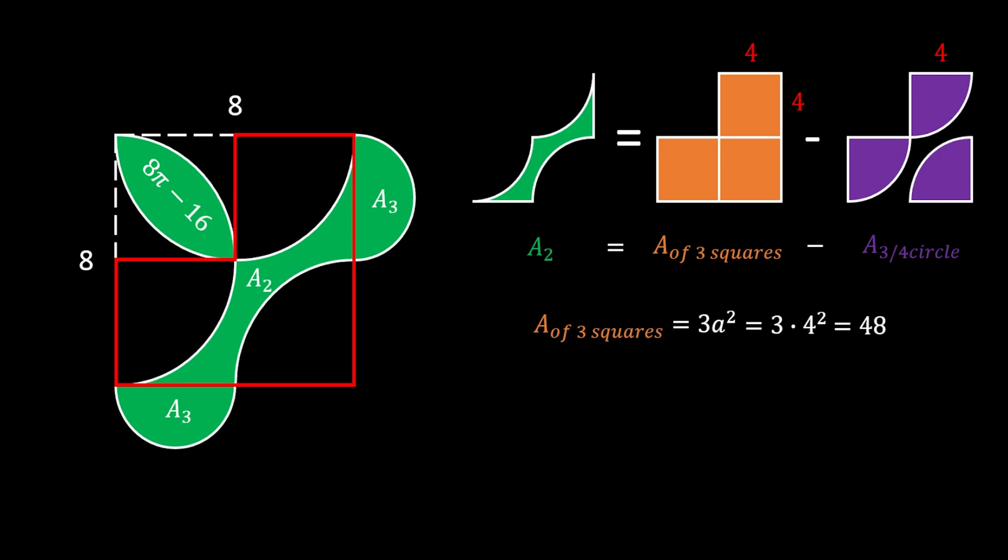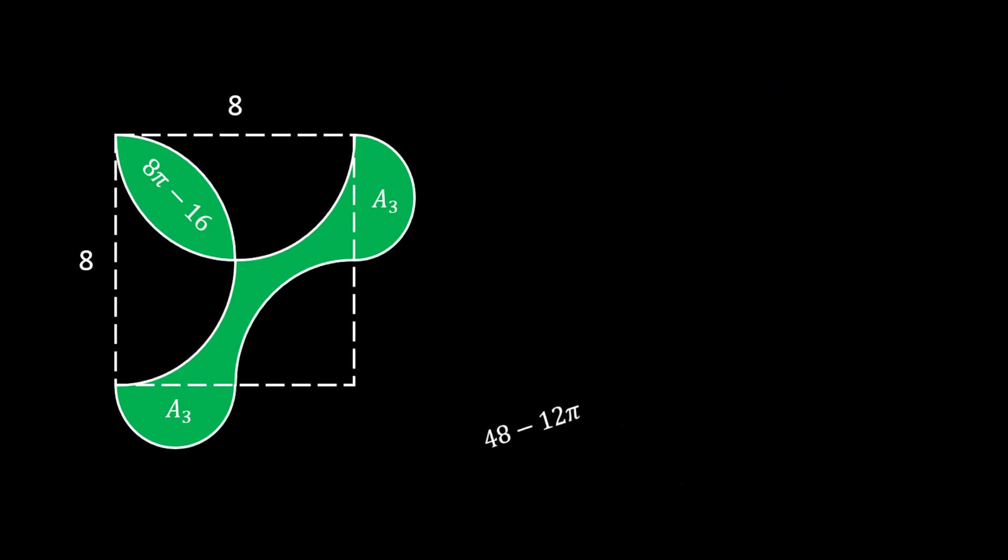Now let's find the area of these three quarters of a circle. That is 3/4 times r² times π, which equals 3/4 times 4² times π, and that is 12π. So that means that area 2 is equal to 48 minus 12π.